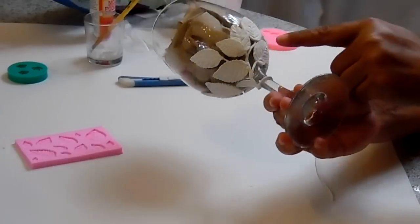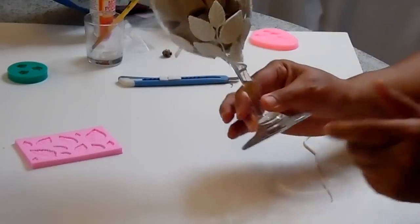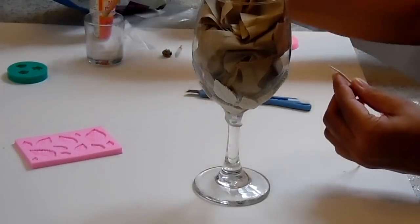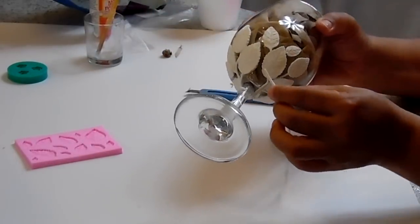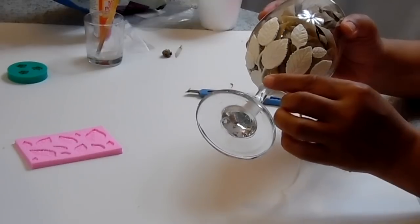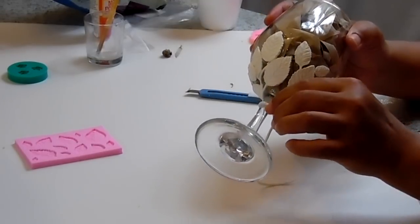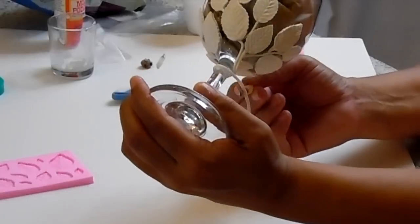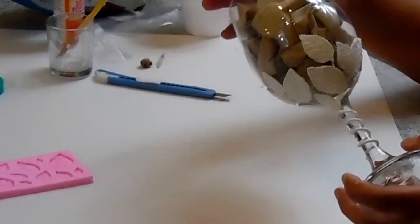I'm done adding my stems to my leaves, so now I'll go ahead and continue to add my stem around the neck of my glass. Add more Mod Podge to the clay and continue from where you left off. And now we have this.